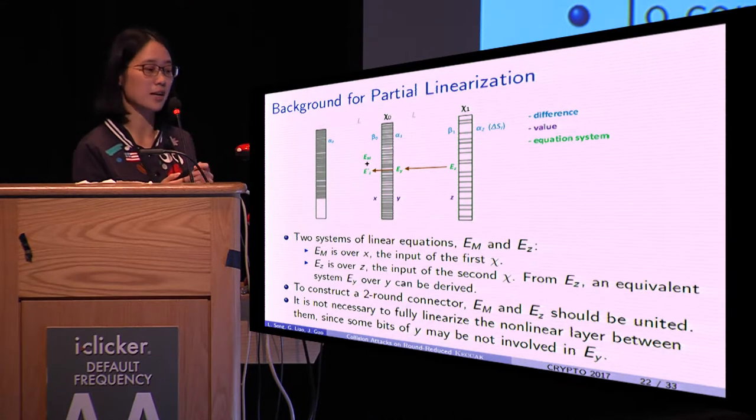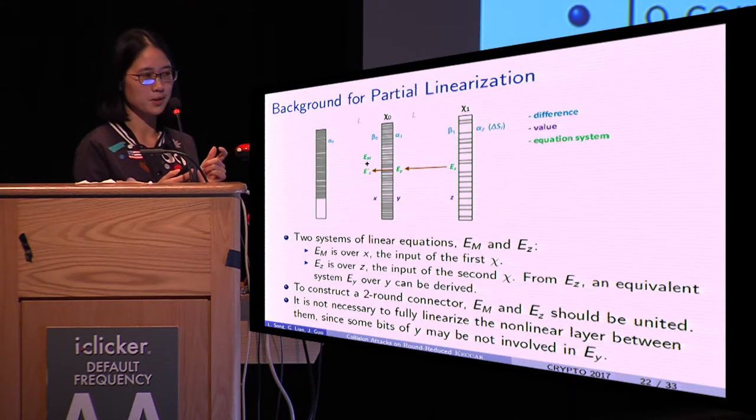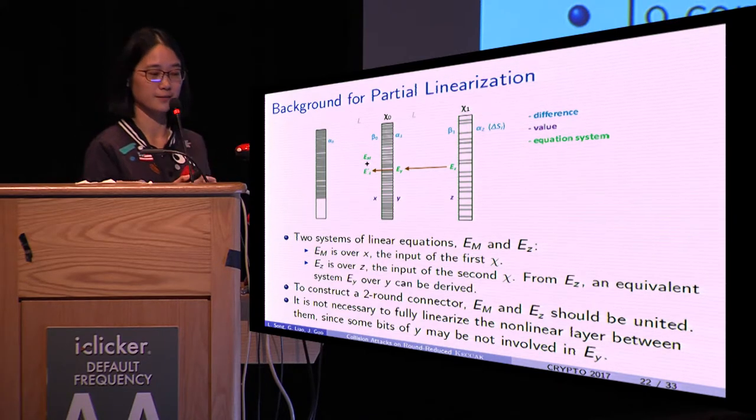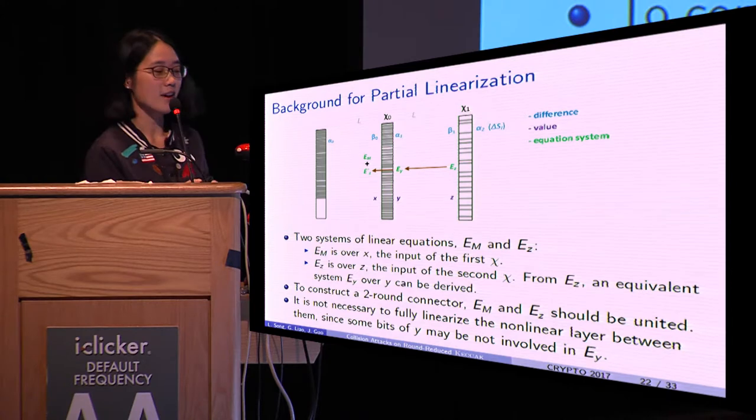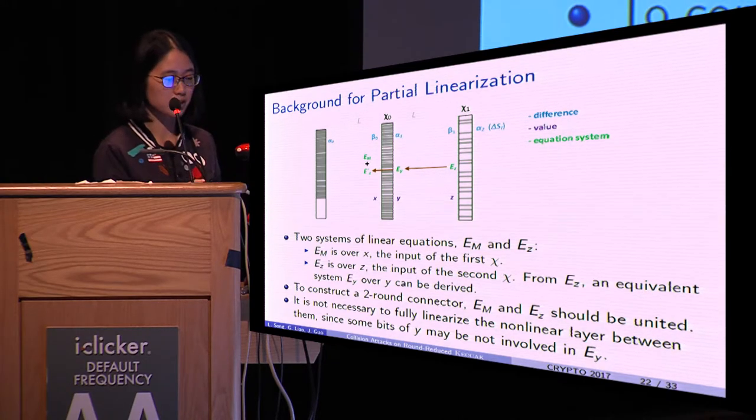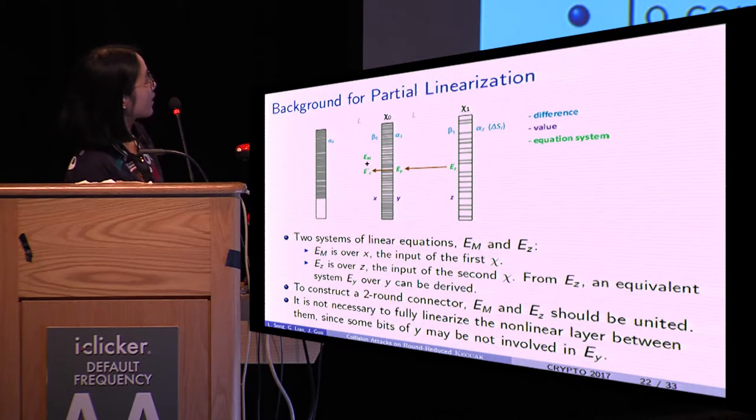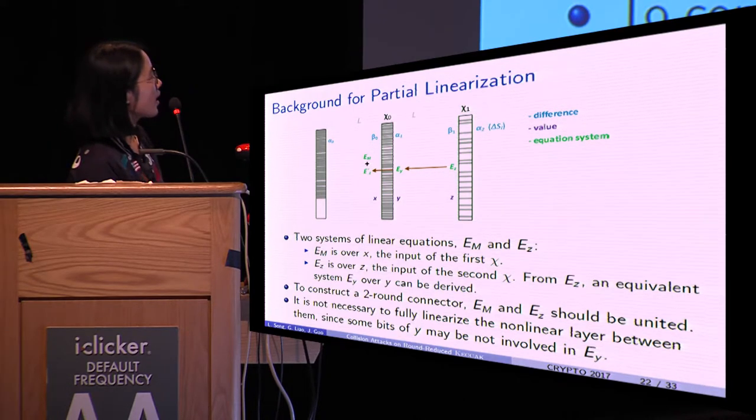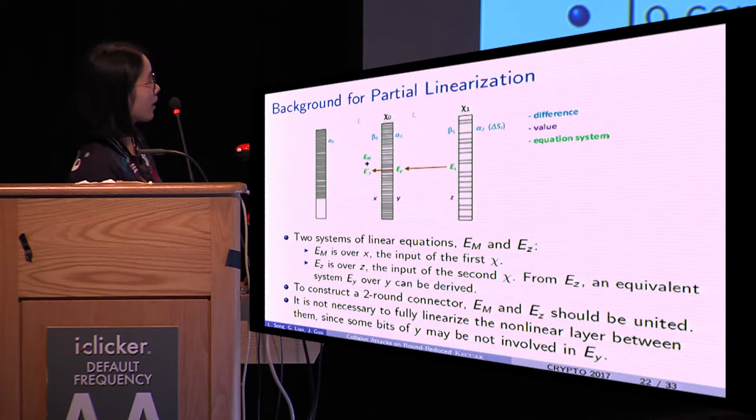The equation system is constructed respectively for the first chi and the second chi using property 2 of the S-box. Here, Em is the equation system over the input value of the first chi, and Ez is the equation system over the input value of the second chi.